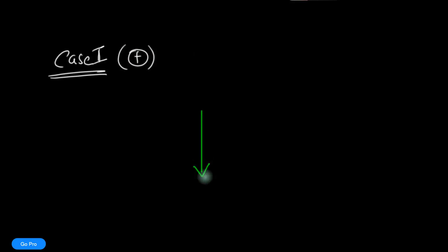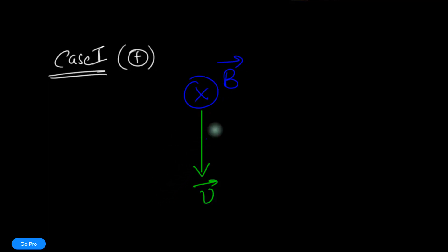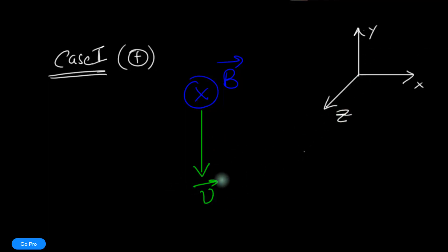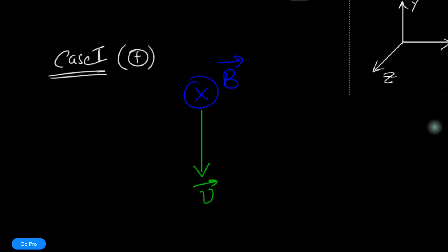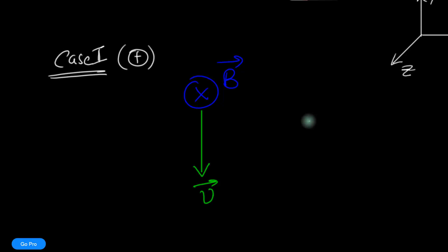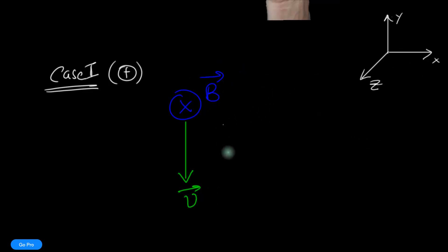Case two: again for a positive charge. The velocity is downwards, and the magnetic field is into the screen. Can you figure out the direction of the rotation and the plane of rotation? Pause the video and try to get the rotation yourself. Notice that v is downwards and B is into the screen, and therefore the rotation is actually in the y-z plane.